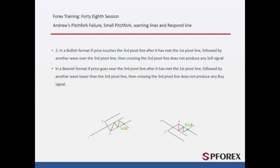In another failure condition, in a bullish format, if a price touches the third pivot line after it has met the first pivot line, followed by another wave over the third pivot line, then crossing the third pivot line does not produce any sell signals. In a bearish format, if price goes near the third pivot line after it has met the first pivot line, followed by another wave lower than the third pivot line, then crossing the third pivot line does not produce any buy signals.